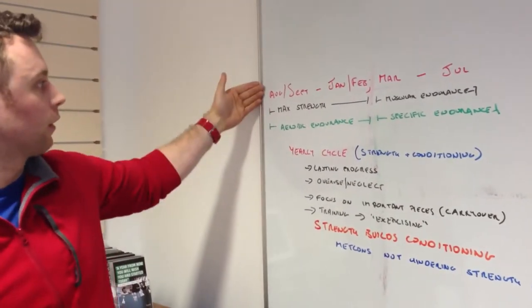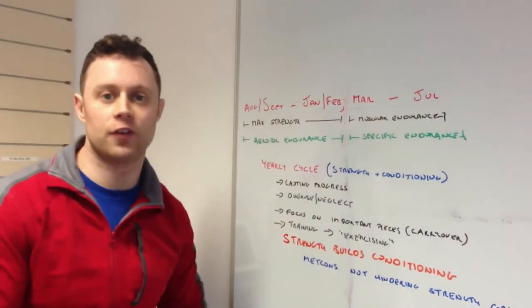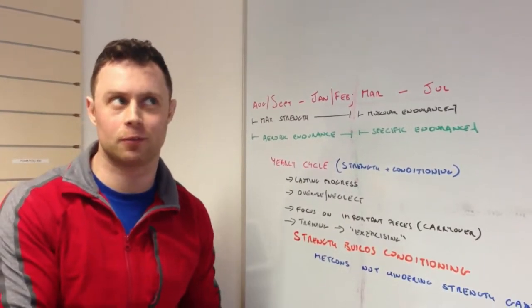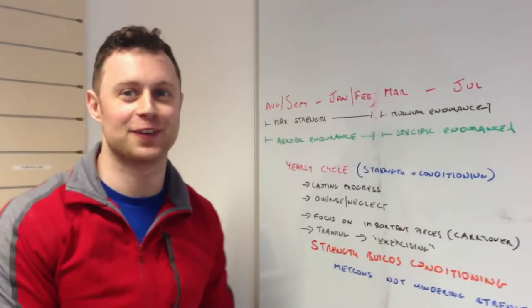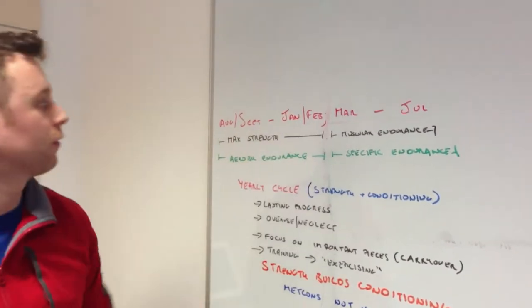So how our year looks, roughly, and this is very truncated and this is essentially stolen from a gentleman at Michael Winchester in Texas. So credit to coachwinchester.blogspot.com or .wordpress.com. Do a search for Coach Winchester and you'll find it. Basically from about August, September time to about January, February time, we're going to work on maximum strength.